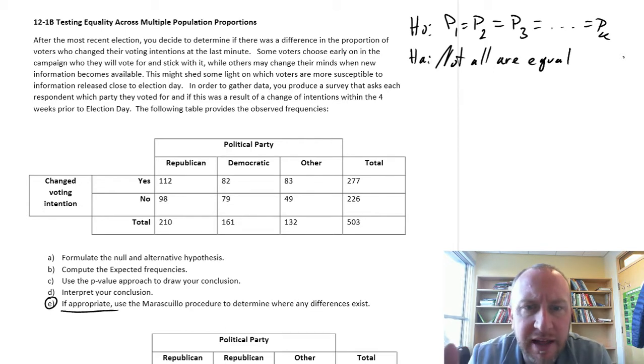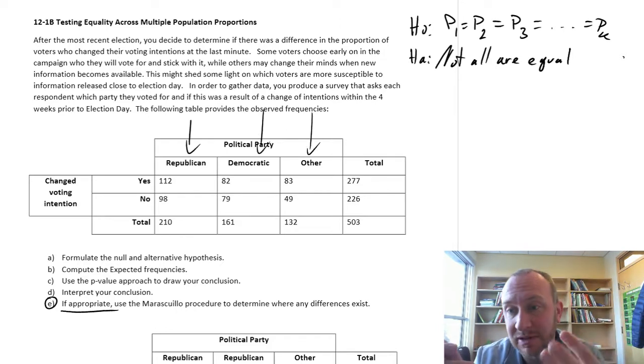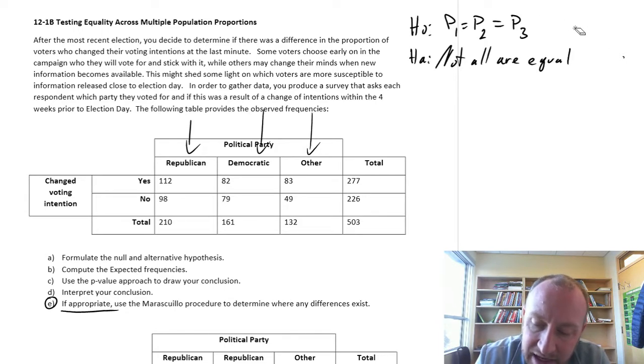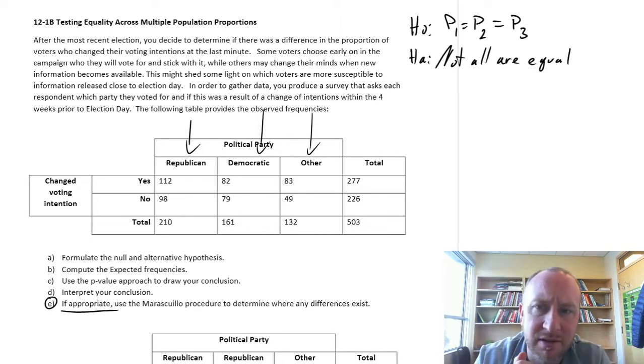So let's get into our numbers. So for Part A, formulate the null and alternative hypotheses. Well here we're keeping it simple. We're keeping it simple, only keeping three populations. We can do more, but it just adds unnecessary work without really showing us anything new. So we'll just keep it to three proportions. So they're either all equal or they're not. So this is done.